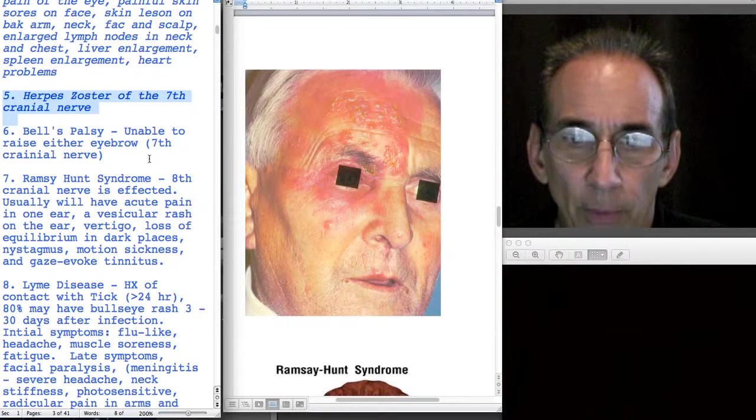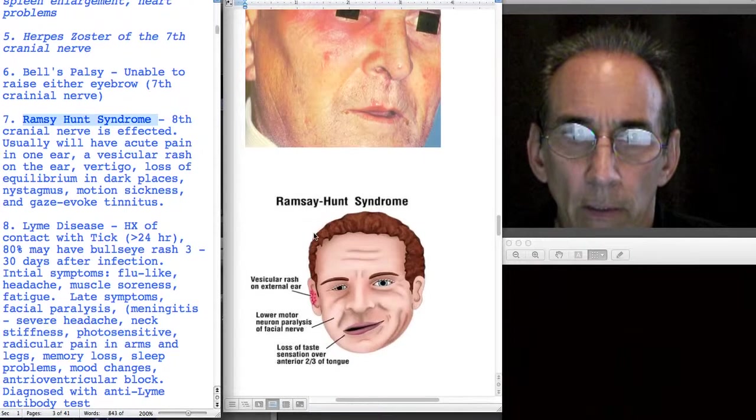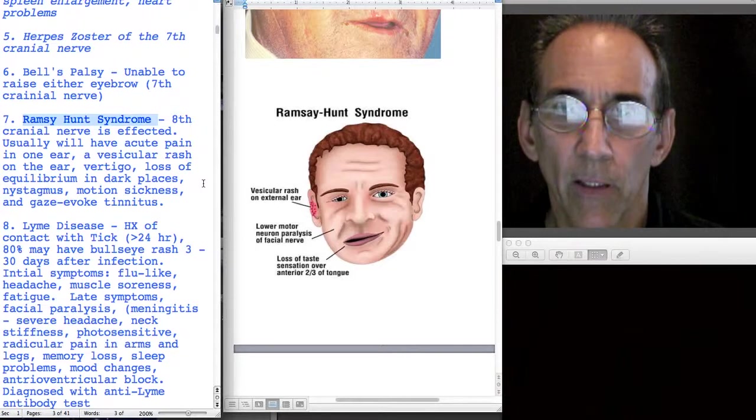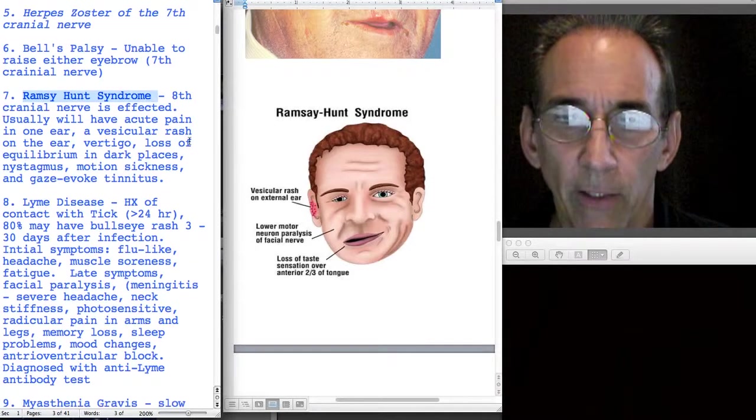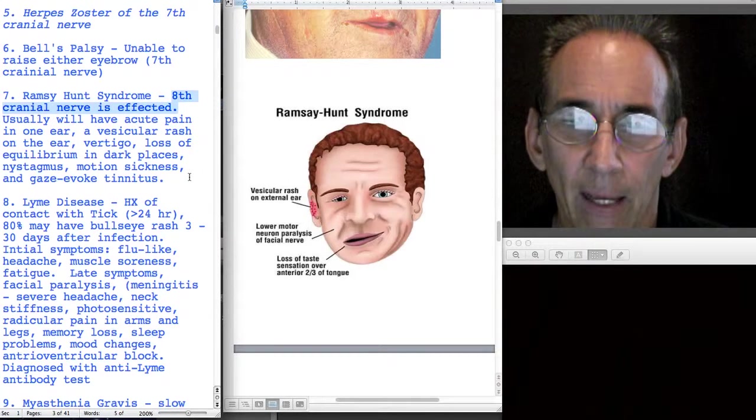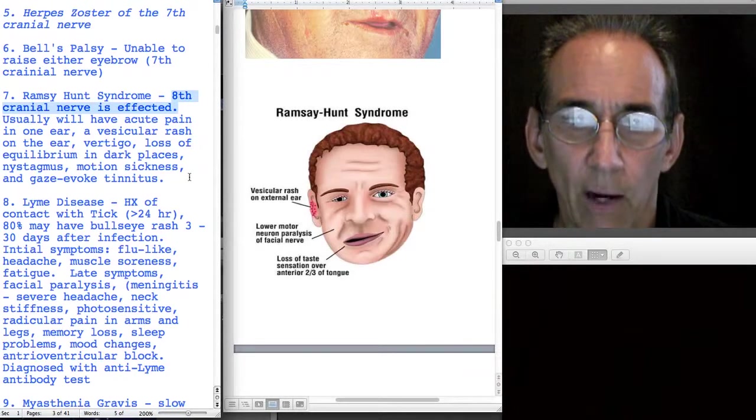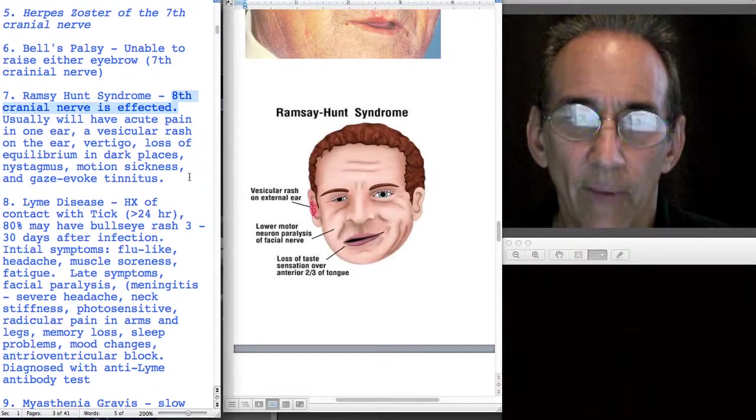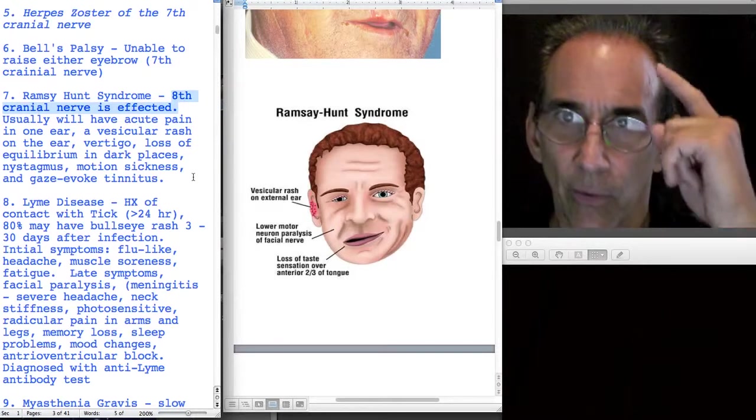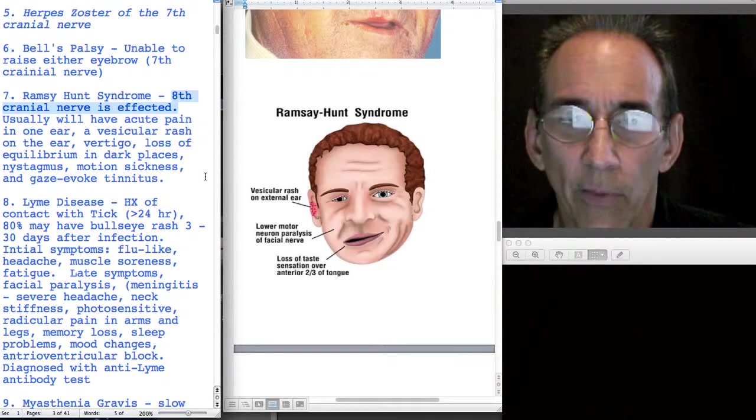Another possible disorder is Ramsey Hunt syndrome. Ramsey Hunt syndrome is a disorder of the eighth cranial nerve, not the seventh, but it's sort of close to the eye so the person may have symptoms there as well. They may have a little bit of facial paralysis down here but not up here because it's the eighth cranial nerve and not the seventh. They may also have loss of taste and sensation over part of their tongue.